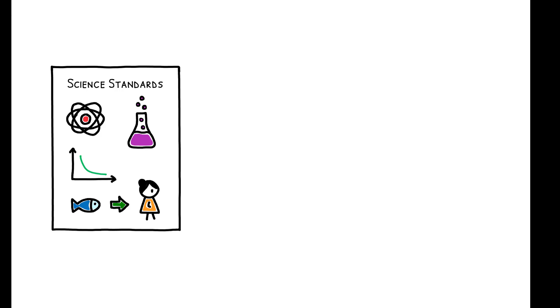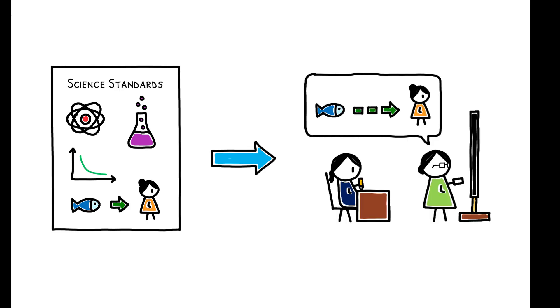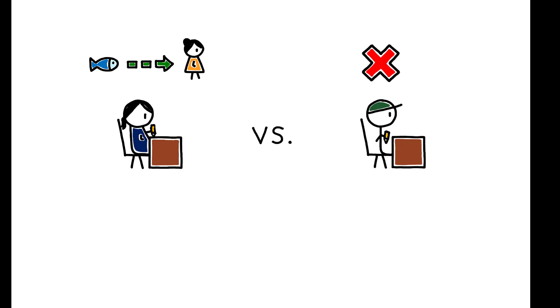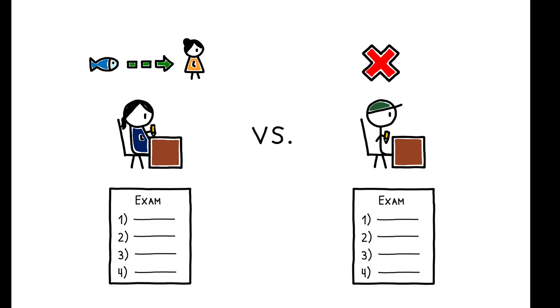There are three main findings. First, science standards do affect what students learn about evolution in school. Student-level data from the 12th-grade NAEP standardized exam reveals that being exposed to a science standard with an evolution score of 1 compared to 1 with a score of 0 increases the share of questions on evolution that a student answers correctly by 20%.